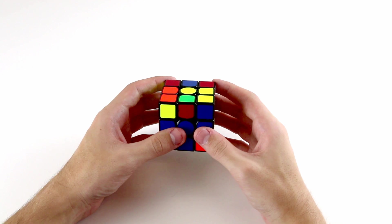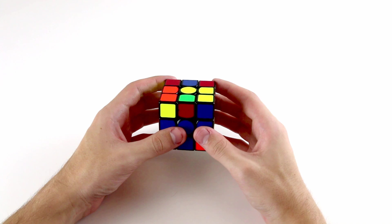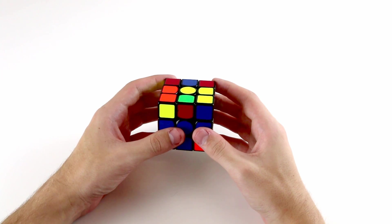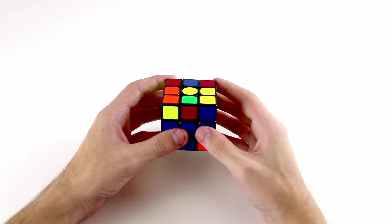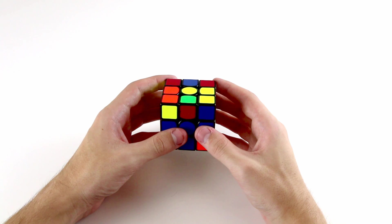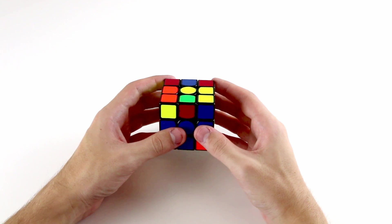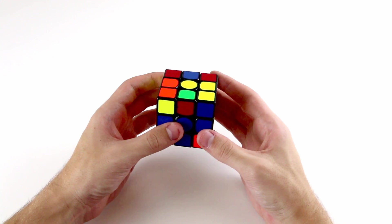After you solve your cross, generally the first F2L pair is the hardest one to find, and after you solve the first F2L pair you tend to get more into a flow as more of the cube becomes solved and there are less places for unsolved pieces to be in.